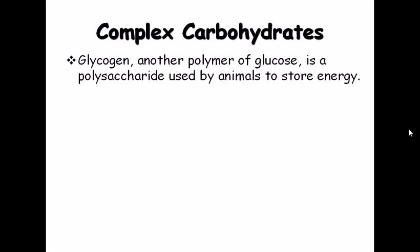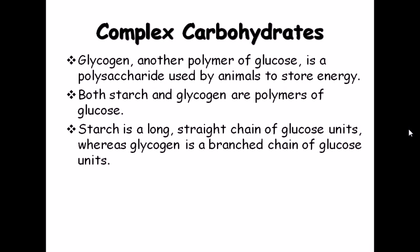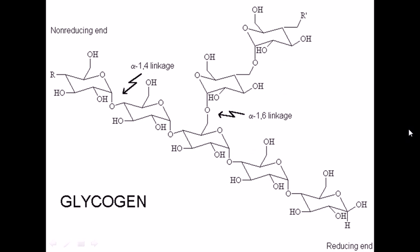Glycogen is another polymer of glucose — a polysaccharide. Both starch and glycogen are polymers of glucose. Starch is a long straight chain of glucose units, whereas glycogen is much more cross-linked or branched. In glycogen, we have alpha 1-4 linkages as well as alpha 1-6 linkages between sugars, where the numbers denote the carbon positions involved in the bond. The branching in glycogen is due to these 1-6 linkages.